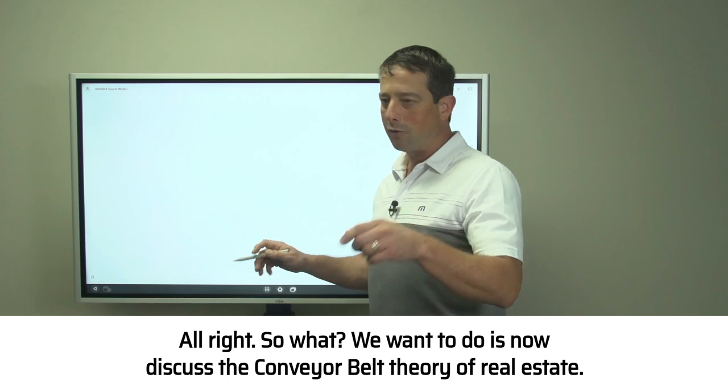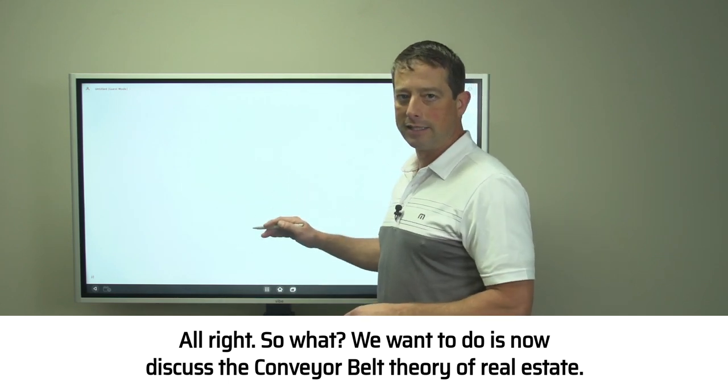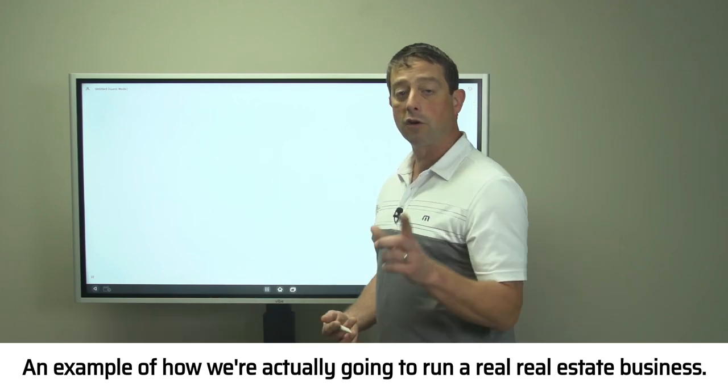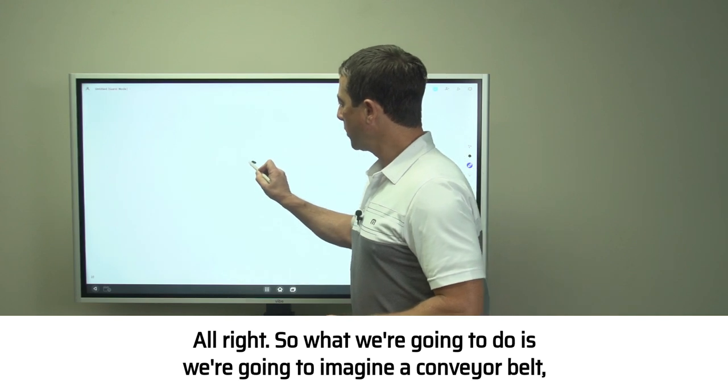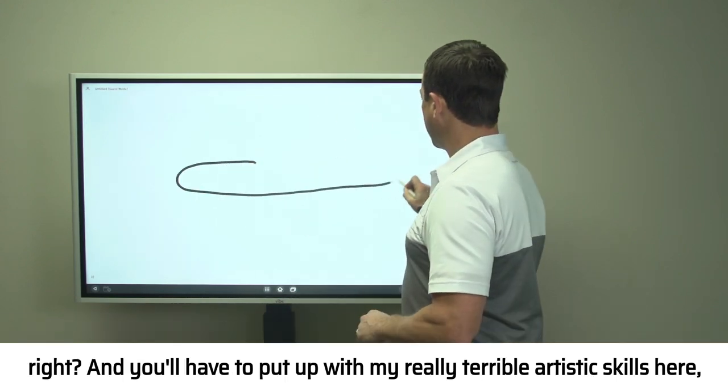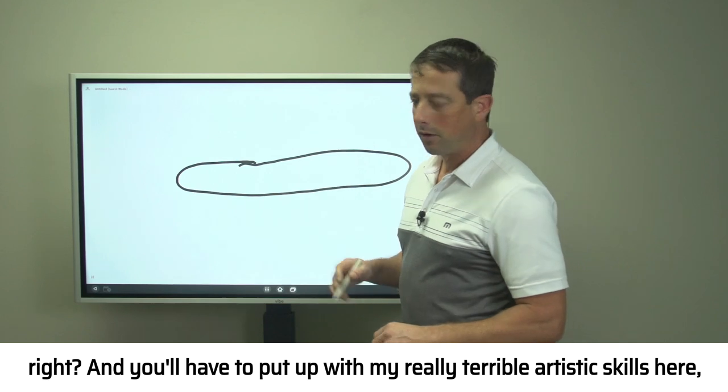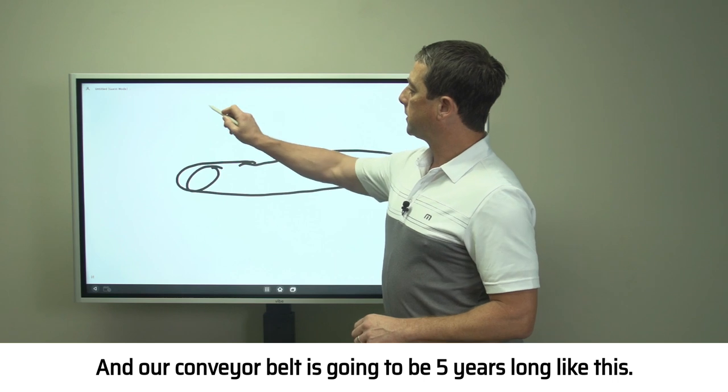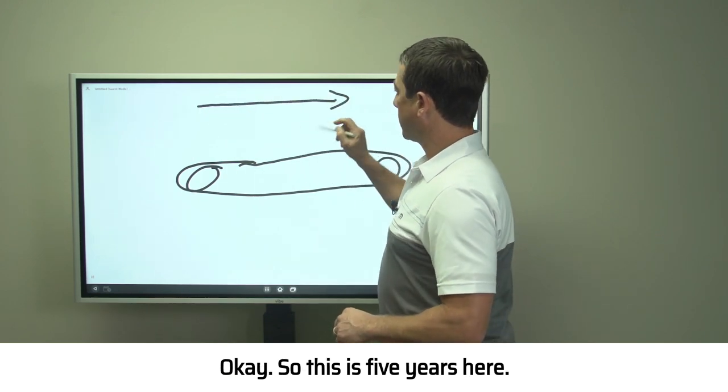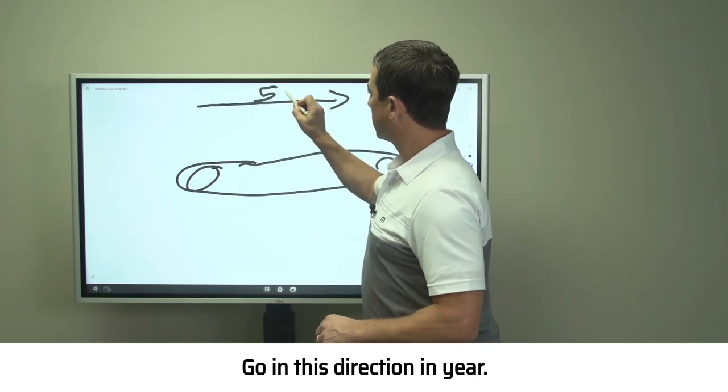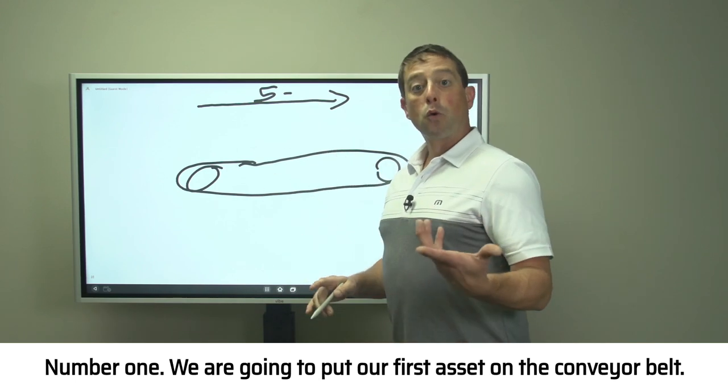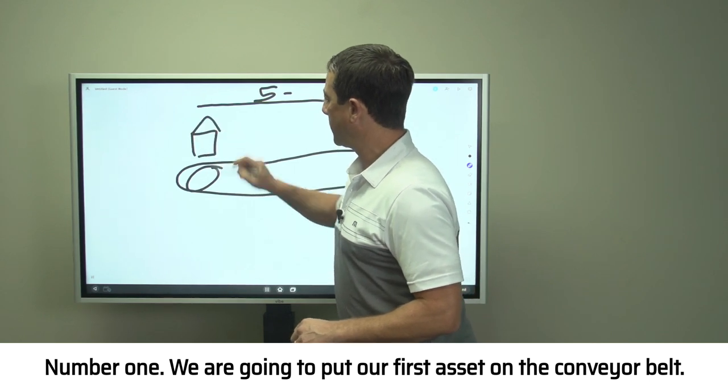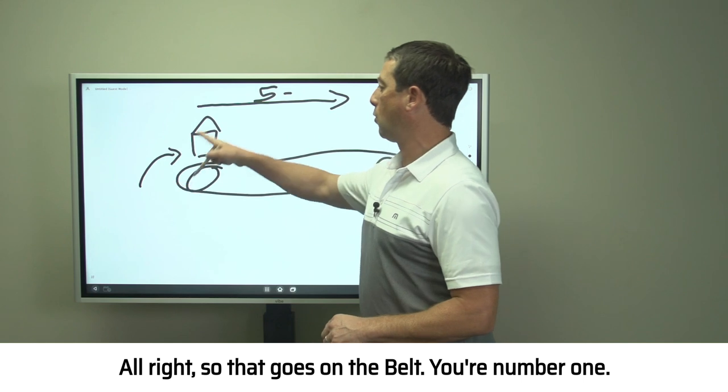Now let's discuss the Conveyor Belt Theory of real estate. This is a theory I've created to teach my students an example of how we're actually going to run a real real estate business. We're going to imagine a conveyor belt—you'll have to put up with my really terrible artistic skills here. Our conveyor belt is going to be five years long. In year number one, we are going to put our first asset on the conveyor belt.